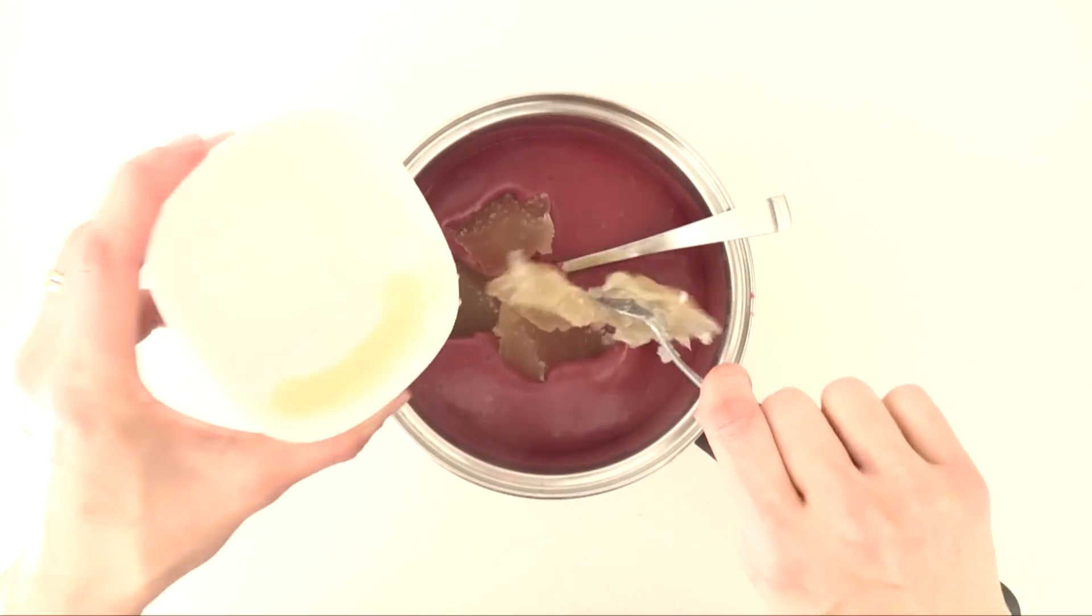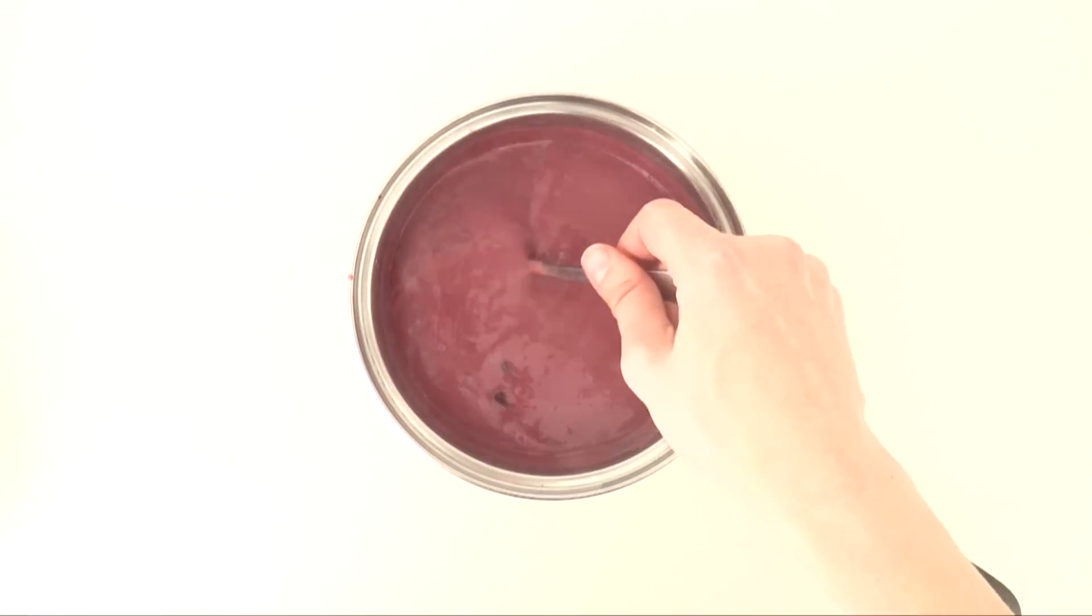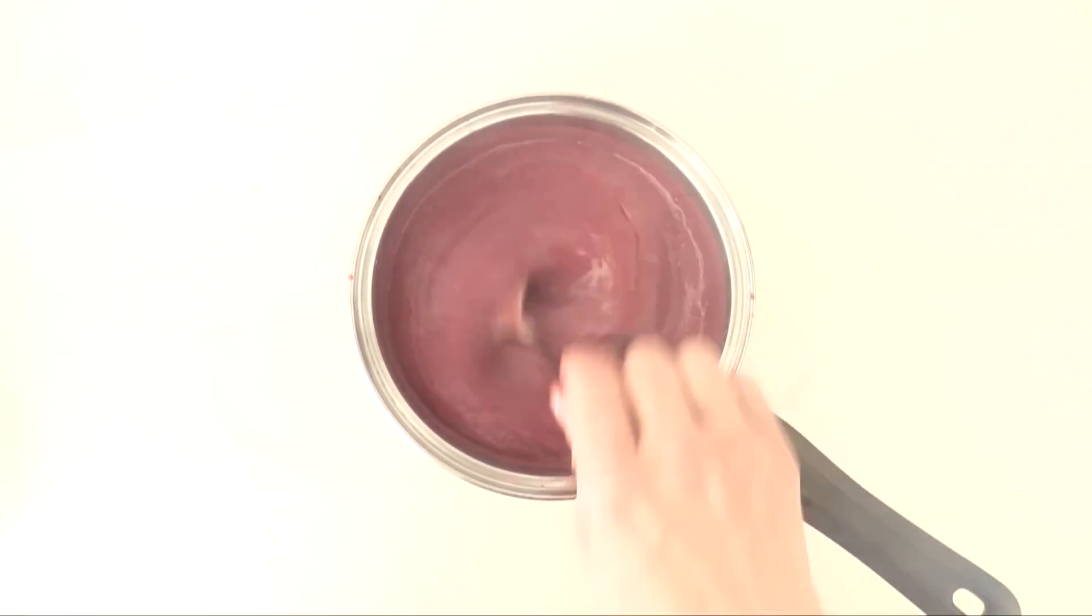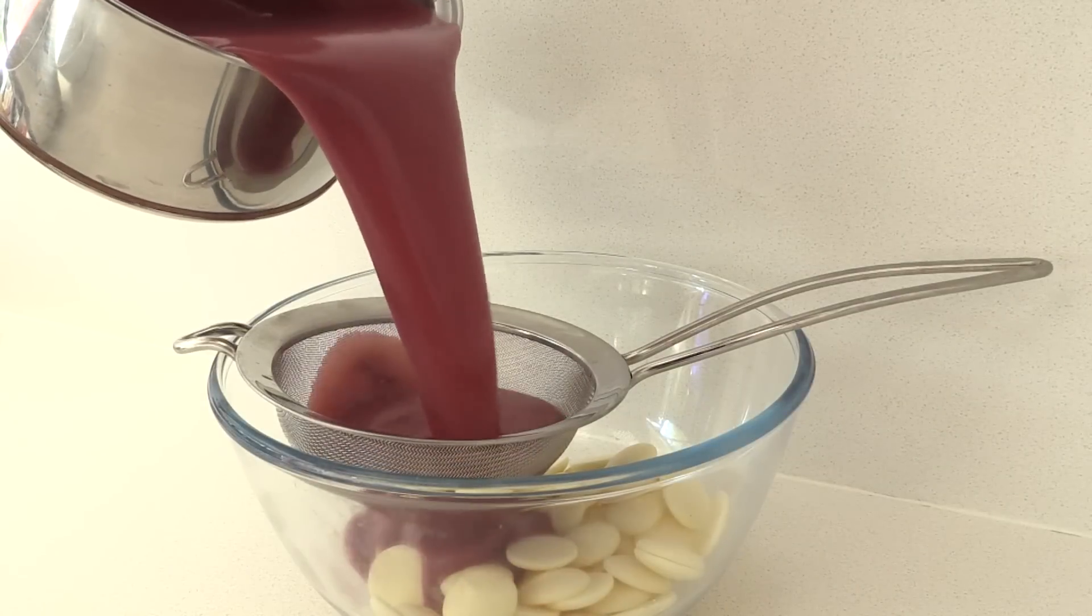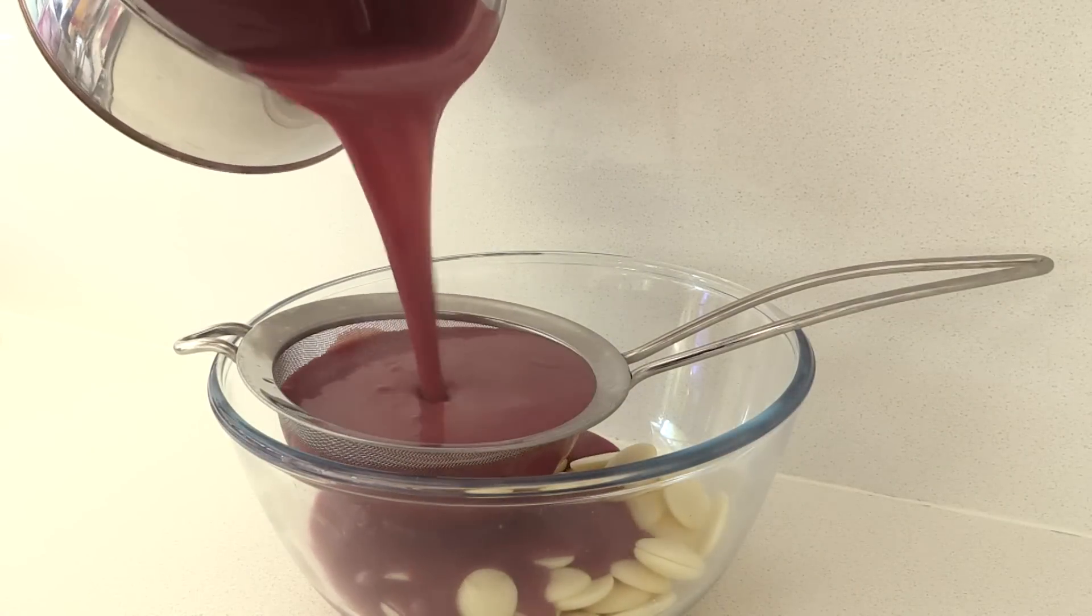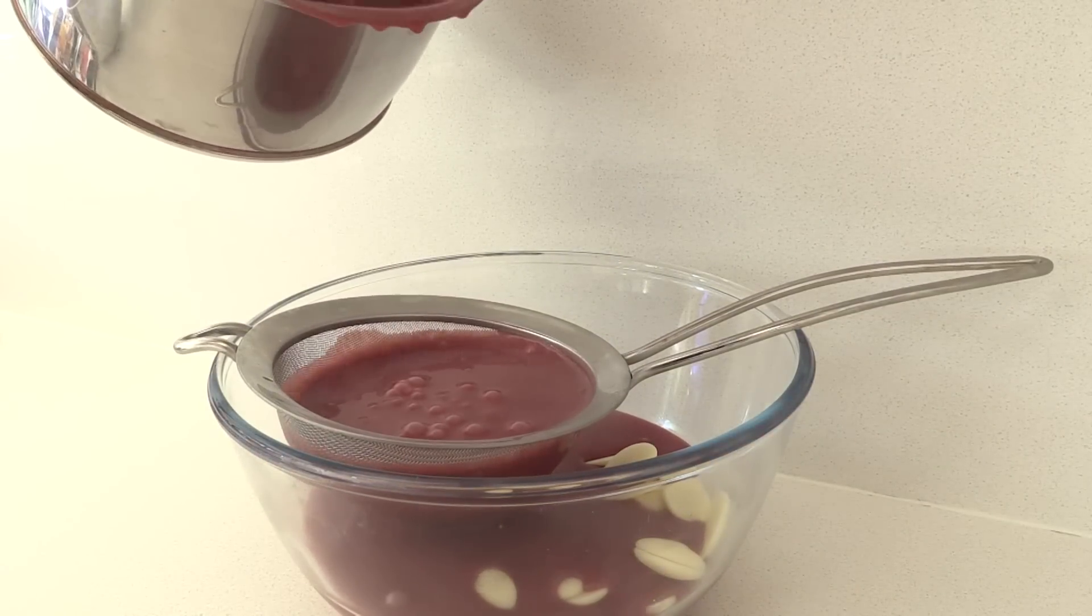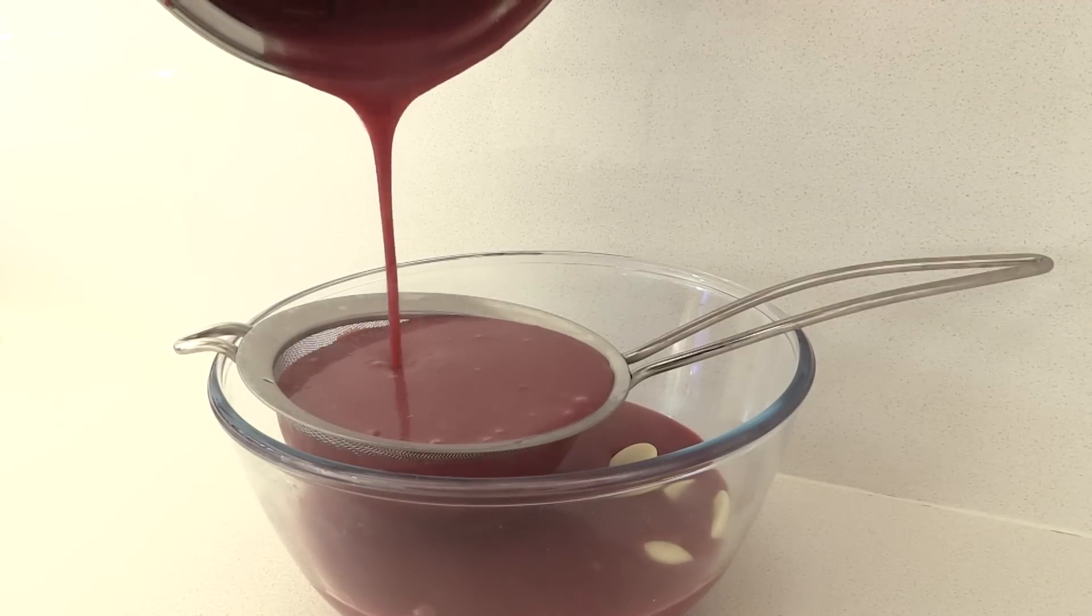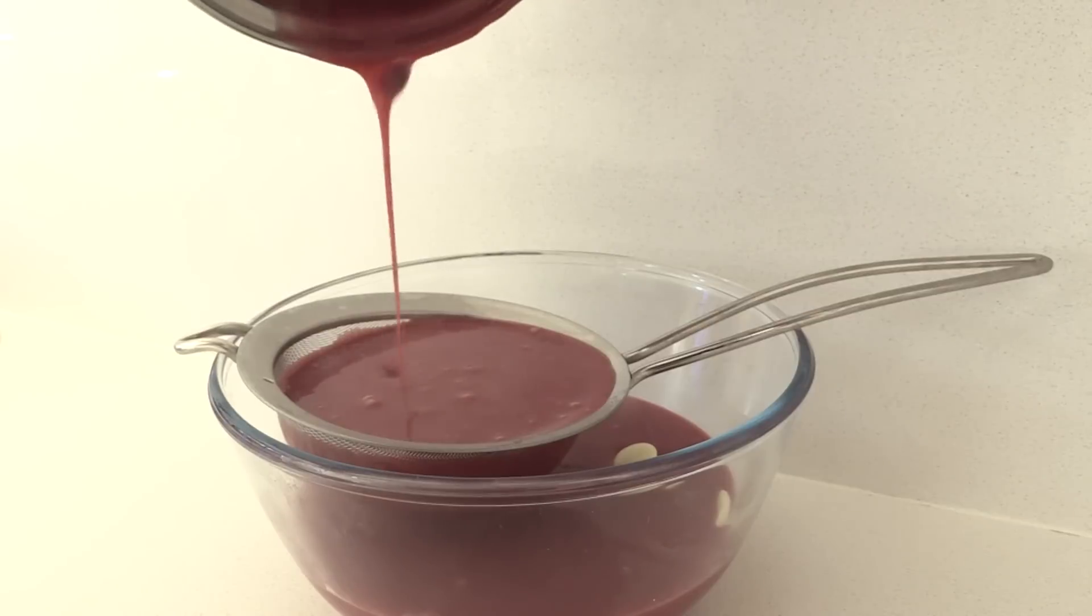Remove it from the heat and stir through the gelatin and the heat of the mixture is going to melt that gelatin down and keep stirring until all the lumps are gone. Now pour it through a sieve onto the white chocolate and the sieve will just help get out any little raspberry seeds that we missed and any little lumps.